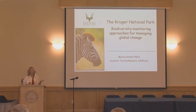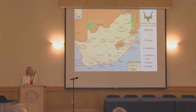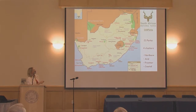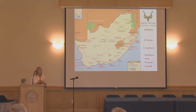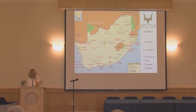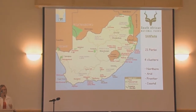I want to show you how we as an organisation work and some of the issues we have. I'm going to look at biodiversity monitoring approaches in a changing world. Kruger is on the eastern boundary of southern Africa, and South African National Parks, or SANParks, manage 21 different parks across the country.